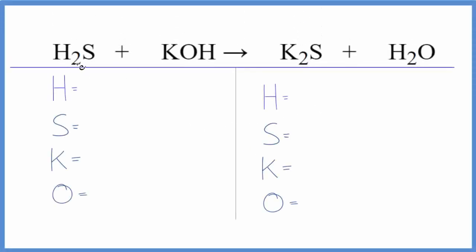To balance this equation, H2S plus KOH, let's count the atoms. We have two hydrogens, but be careful—there's a hydrogen out here people often forget. We have three hydrogens total, one sulfur, one potassium, and one oxygen on the reactant side.